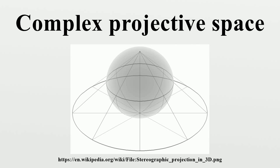CP(n) equals S^(2n+1) / U(1). This is because every line in C^(n+1) intersects the unit sphere in a circle. By first projecting to the unit sphere and then identifying under the natural action of U(1), one obtains CP(n). For n equals 1, this construction yields the classical Hopf bundle. The differentiable structure on CP(n) is induced from that of S^(2n+1), being the quotient of the latter by a compact group that acts properly.